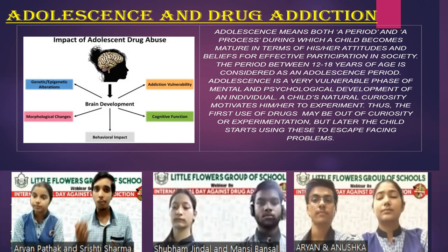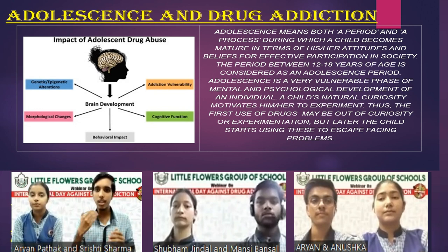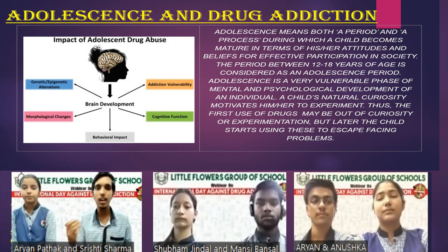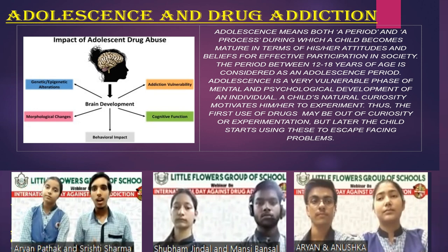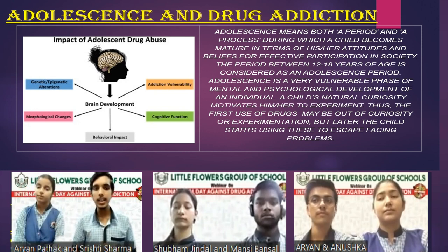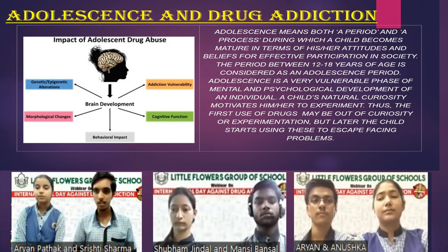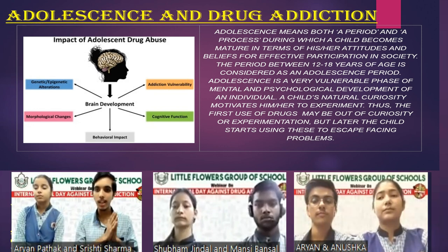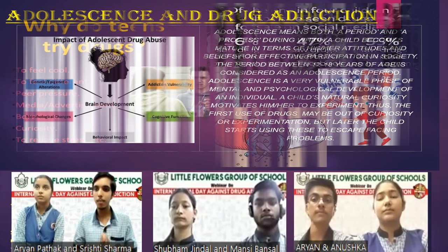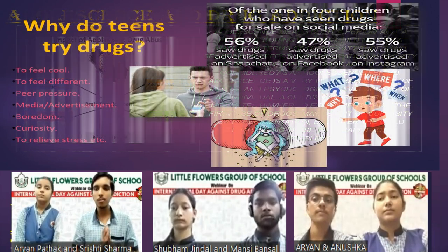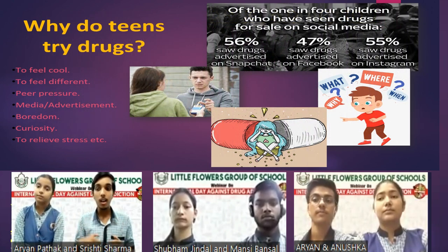The question arises: what does adolescence literally mean? It is a process during which a child becomes mature in terms of his or her attitudes and beliefs. The period between 12 to 18 years of age is considered adolescence, and it is a very crucial phase of mental and psychological development. A child's natural curiosity motivates him or her to experiment, and thus the first use of drugs may be out of curiosity. But later, the child starts using these to escape from facing their problems.